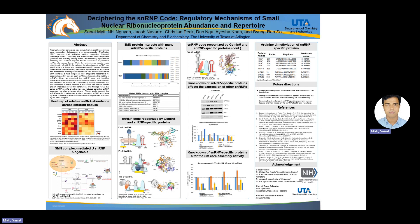SNARF, along with 50 splicing factors, forms spliceosomes which play a crucial role in the post-transcriptional regulation of gene expression. For these roles, spliceosomes require equal stoichiometry of the SNARFs for splicing.